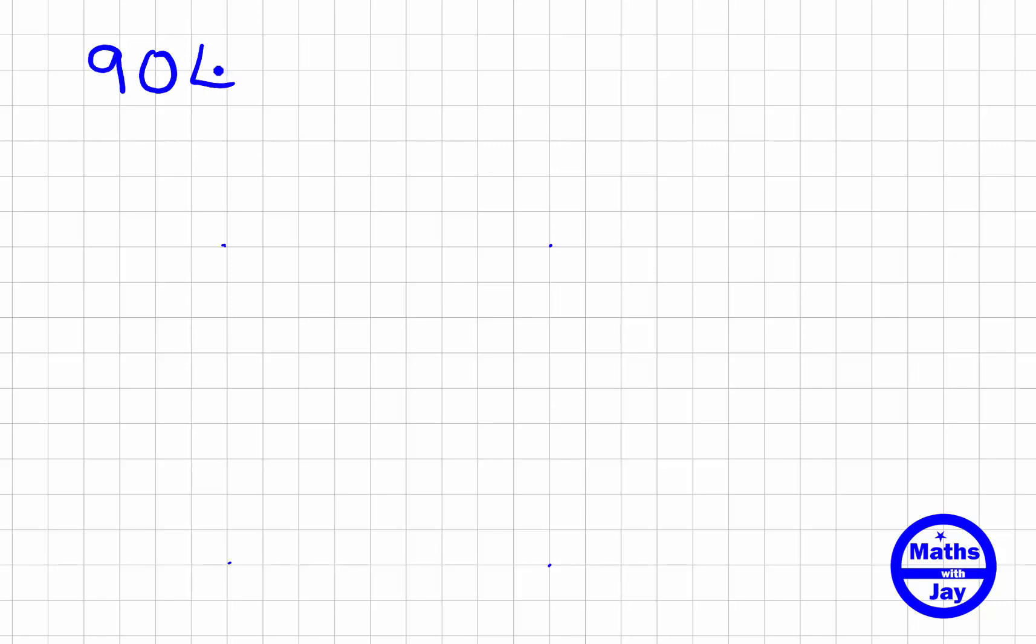We're going to multiply these two three-digit numbers together, 904 multiplied by 815, and we're going to use lattice multiplication. So we'll draw a lattice.